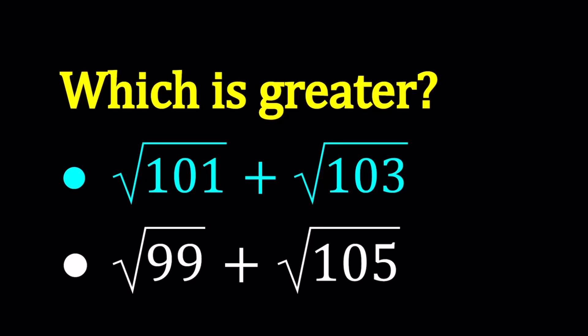Hello everyone. In this video, we're going to be comparing two numbers, two radicals. We have the square root of 101 plus the square root of 103, and the square root of 99 plus the square root of 105. And we're going to try to find out which number is larger.